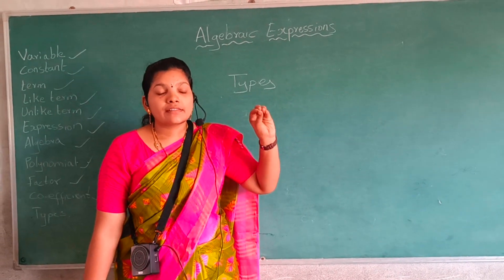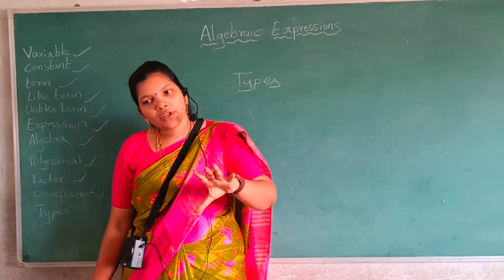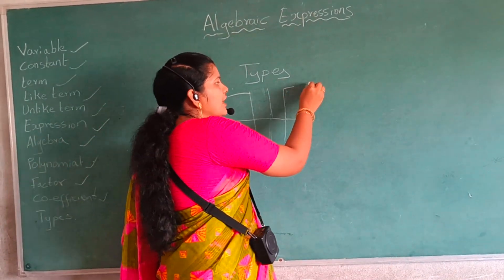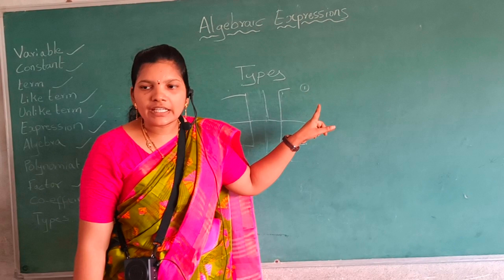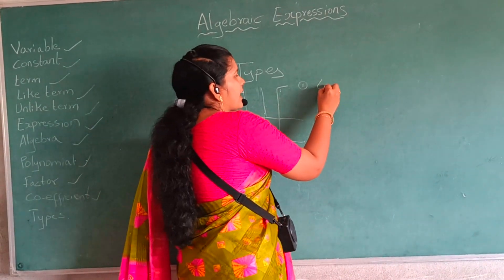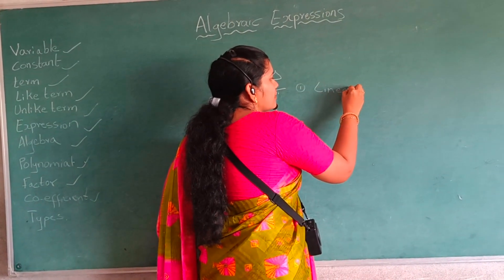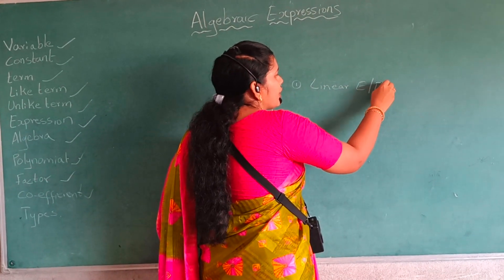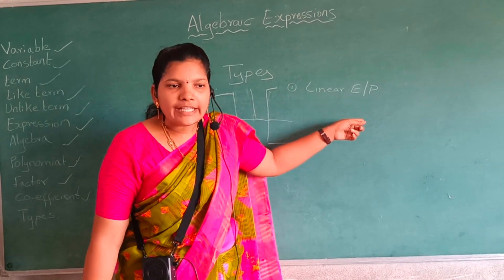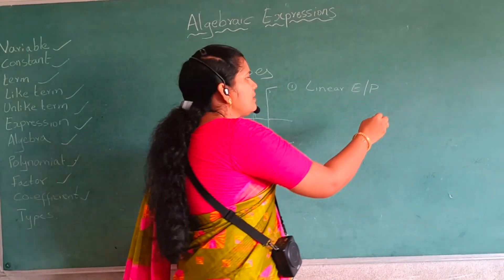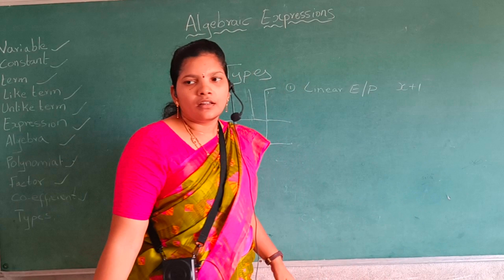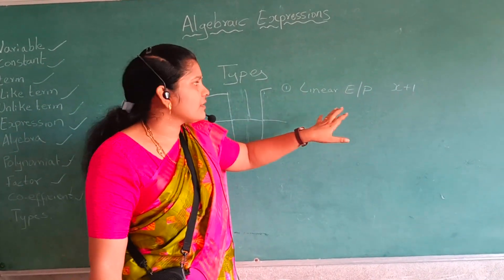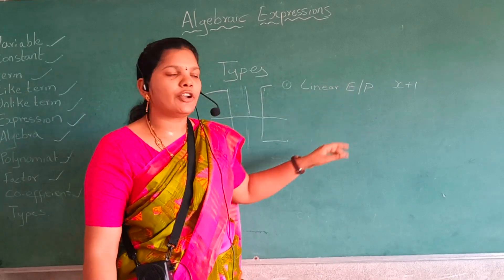There are 6 types of polynomials or expressions. First of all, if the degree is 1, that is called a linear expression or linear polynomial. For example, x plus 1 — here the degree is 1, so the expression is called a linear expression or linear polynomial.